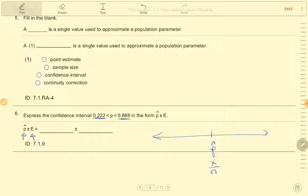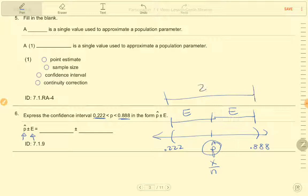Based on those boundaries 0.222 and 0.888 I can figure out what p was and what the margin of error that was subtracted and added on to p were if I find the midpoint and half the distance because this is 2 times E.